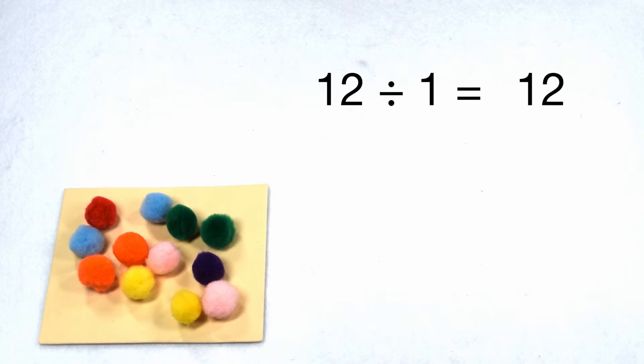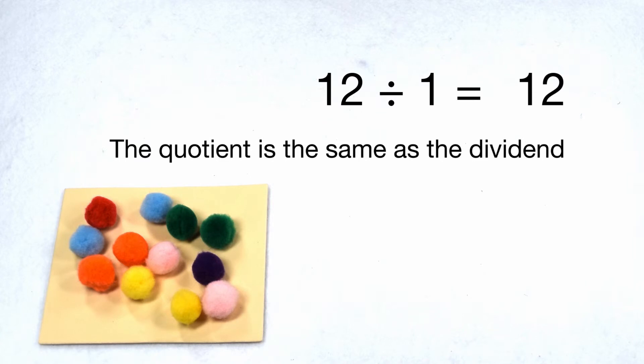If we divide by one enough times, we notice there's a pattern developing. Anytime we divide a number by one, the solution to that problem or the quotient is always going to be the same as our dividend. Anytime a number is divided by one, the quotient comes out to be itself.